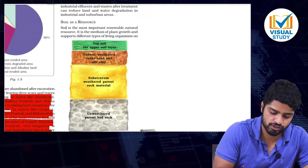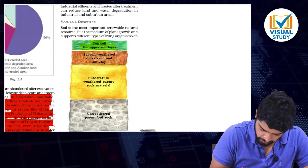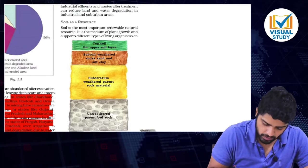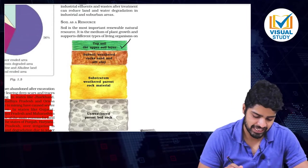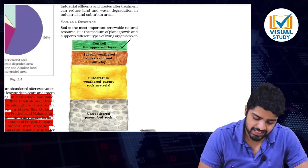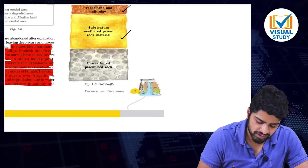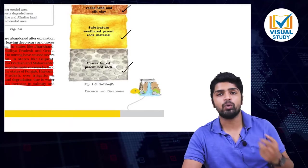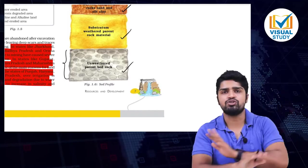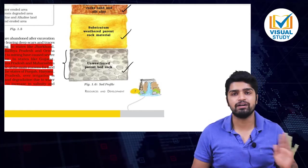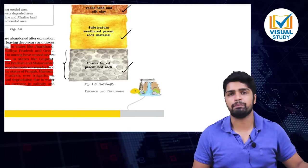Soil as a resource: the top layer of the soil is called the upper soil layer. Below it is the subsoil with weathered rocks, sand and silt clay. Below that is the substratum with weathered parent rock material, and the last layer is unweathered parent rock material — the bedrock which has not been touched at all by human developments.